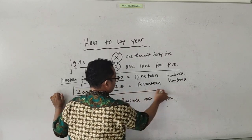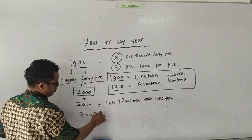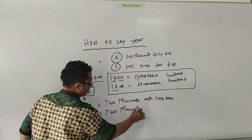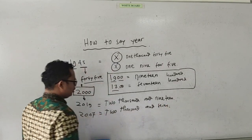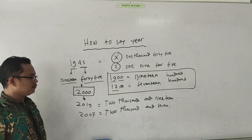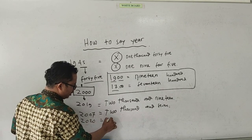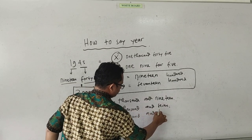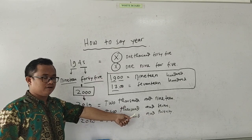Nah, ini pemakaiannya. Bagaimana kalau tahun misalnya 2007? Maka kita pakai menjadi 'two thousand and seven'. Oke. Tahun berapa sekarang? Tahun 2020. Maka bisa kita katakan menjadi 'two thousand and twenty'. What year is this year? 'Two thousand and twenty'.